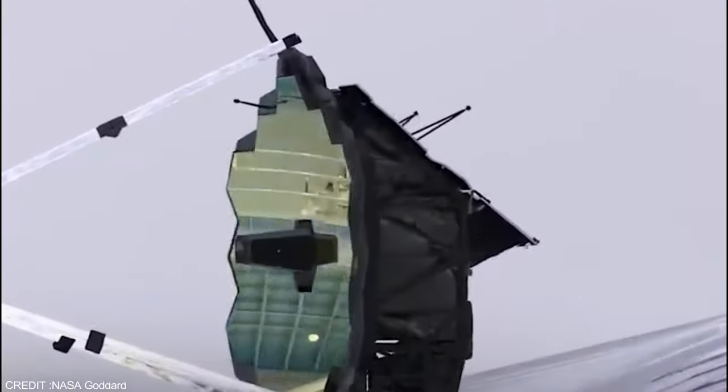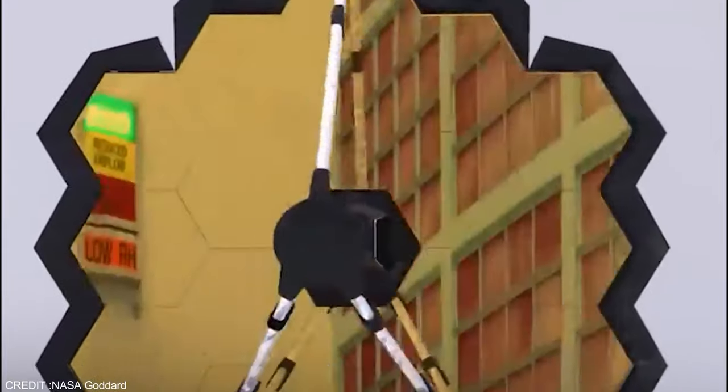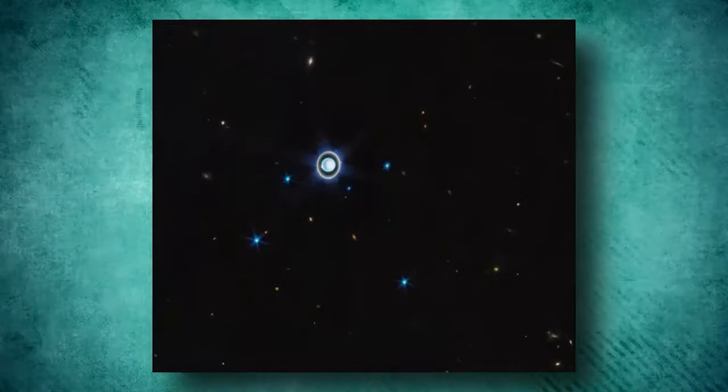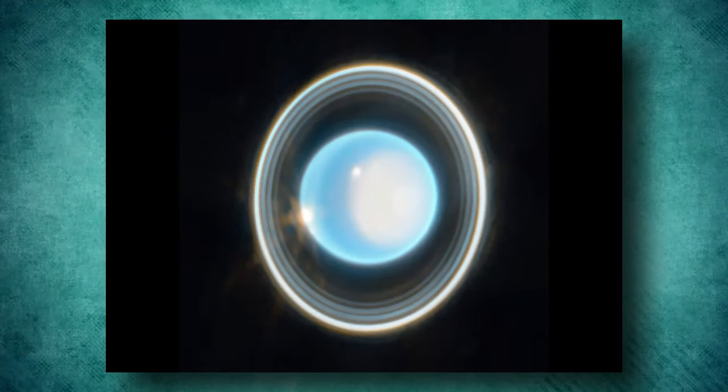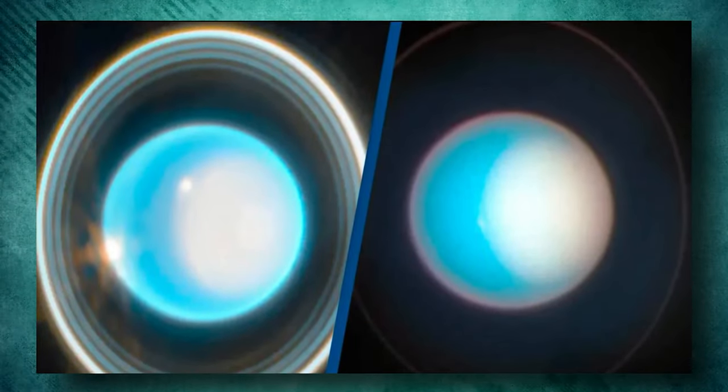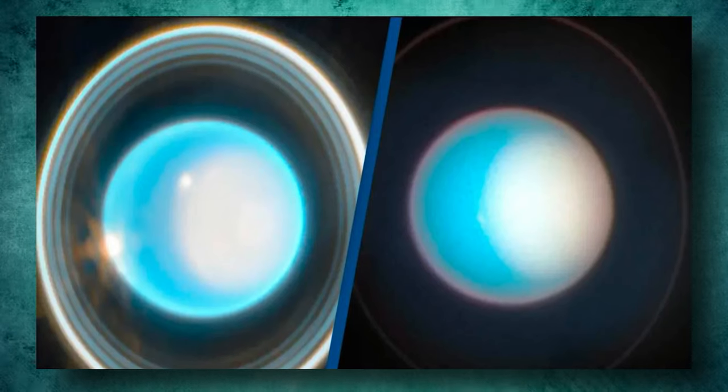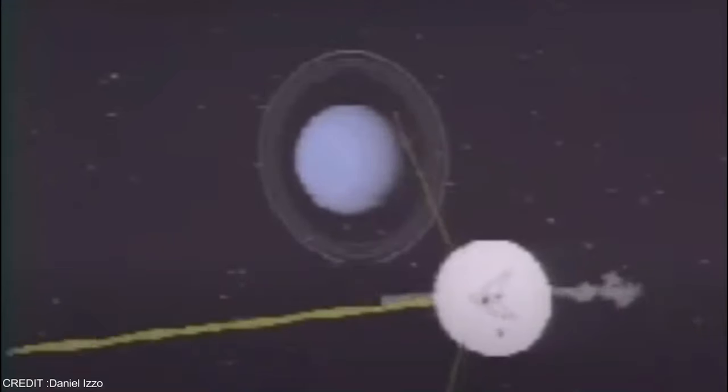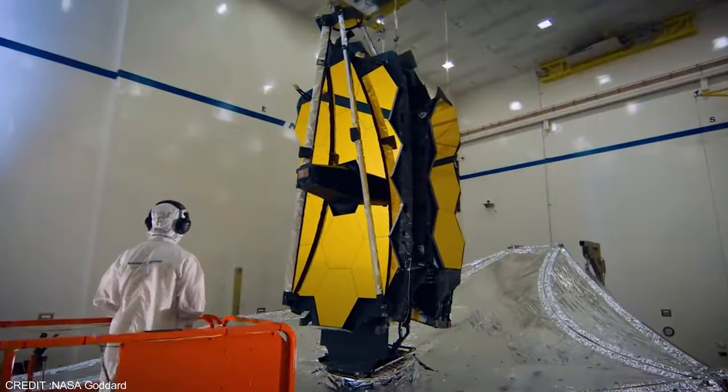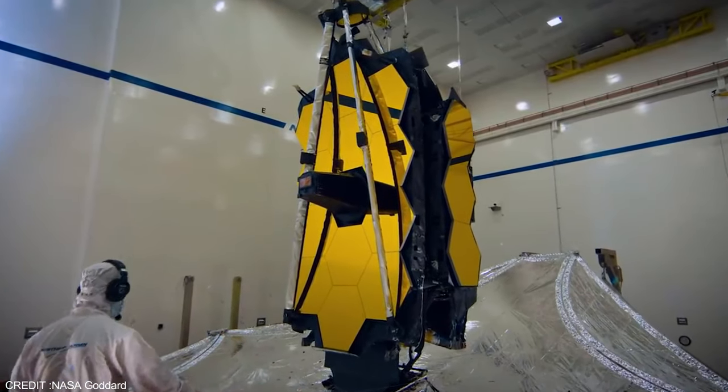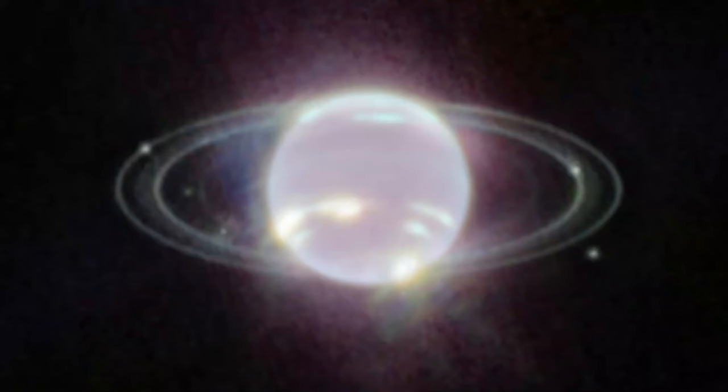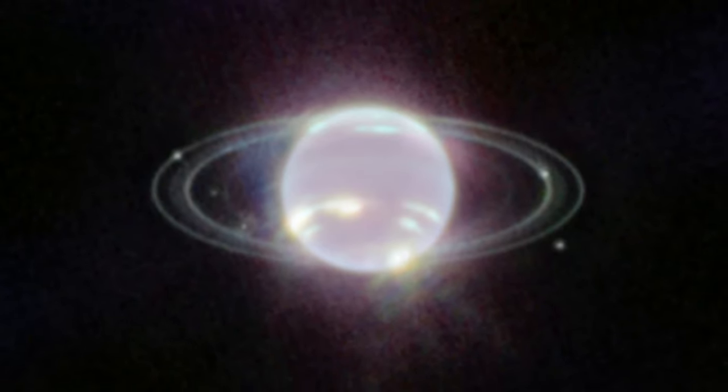Prepare to be amazed by the stunning image of Uranus captured by the JWST. This jaw-dropping image reveals Uranus's intricate ring system, its most prominent moons and ever-changing atmosphere, in stunning clarity and detail. What's truly remarkable is that it depicts Uranus as a dynamic and evolving world. The Voyager 2 spacecraft's last flyby in 1986 showed the planet as a static blue globe. However, the JWST's new image provides a vastly different perspective, revealing Uranus's complex and ever-changing weather patterns.